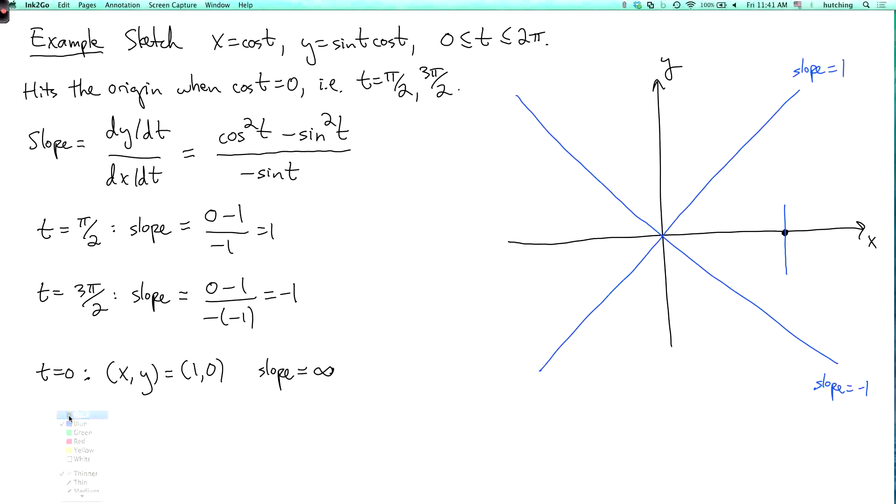And at t equals pi, x, y equals what? So now cosine is minus 1 and sine is 0. So you get minus 1, 0. And the slope is, again, infinite, because sine is 0 and cosine is 1. Or cosine is minus 1. Okay, so here we are at time t equals pi, and again, the tangent line is vertical.